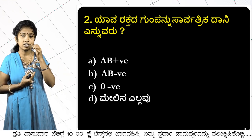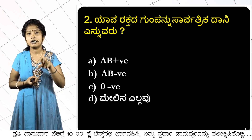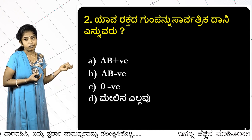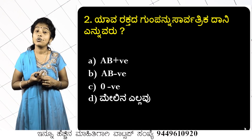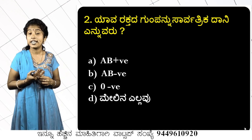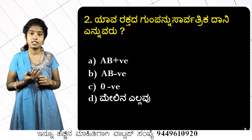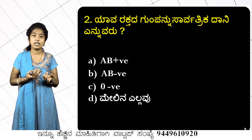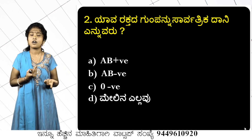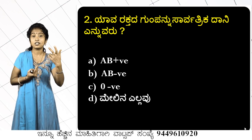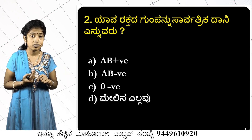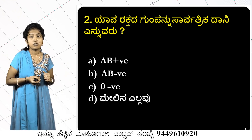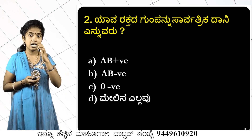AB negative is the rarest blood group in the world. O negative is the universal donor. A person with O negative blood group can donate to anyone regardless of blood group — O positive, AB negative, AB positive — making O negative the universal donor.